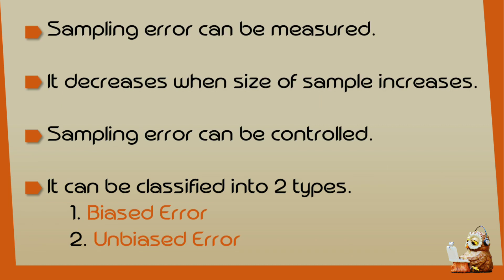Sampling error can be measured. It decreases when the size of the sample increases. Sampling error can be controlled and can be classified into two types: a biased error and an unbiased error.